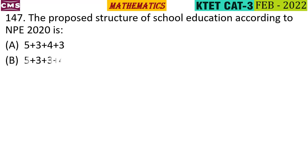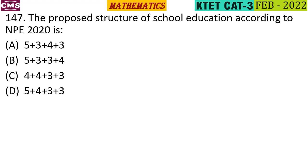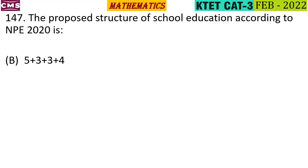The proposed structure of school education according to NEP 2020 is which of the following? The options are: 5+3+4+3, 5+3+3+4, 4+4+3, 4+4+3+3, and 5+4+3+3. The correct answer is option B — 5+3+3+4.